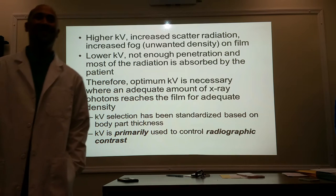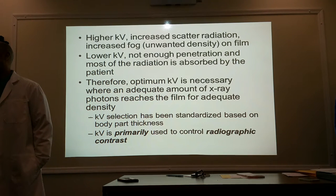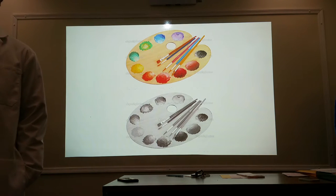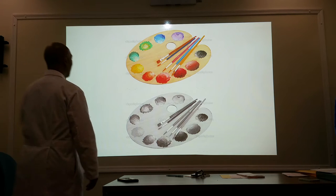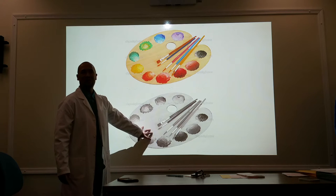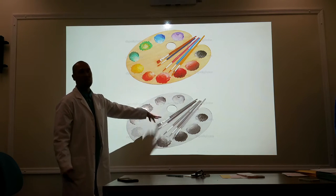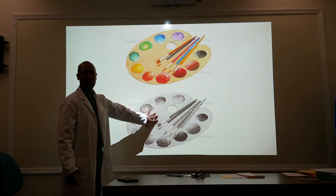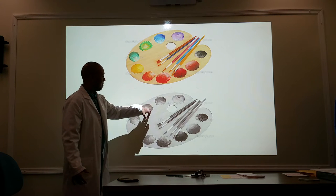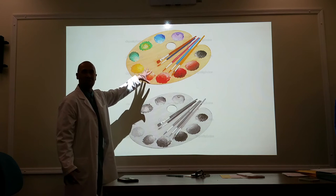That was just on KV. Time for some math. We're dealing with x-rays, which are black and white and different shades of gray. Instead of colors, we deal with shades of blacks and whites and grays. This is the same image — colorized versus black and white. This is our tools of the trade.